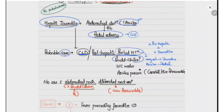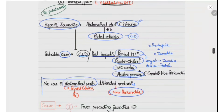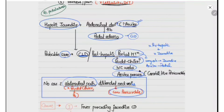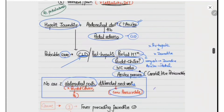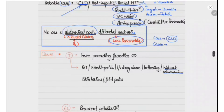Post-hepatic portal hypertension can occur due to Budd-Chiari syndrome, IVC webs, or constrictive pericarditis. In Budd-Chiari syndrome there will be associated abdominal pain; in constrictive pericarditis there will be distended neck veins. Since these are not present in our history, the probable diagnosis according to the history is CLD. We have determined this is probably chronic liver disease, and now we will try to understand the cause of this CLD by asking further history.